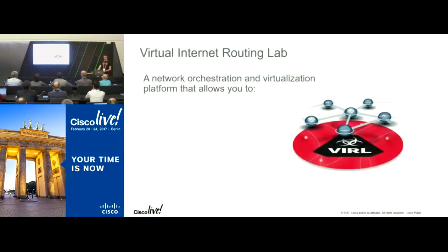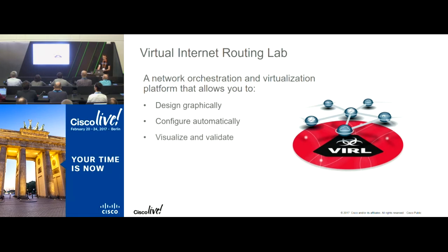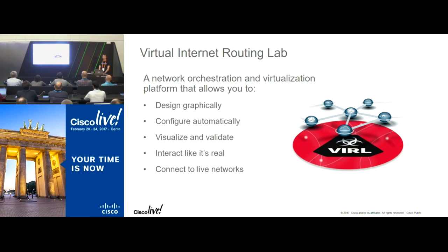VIRL is the Virtual Internet Routing Lab. It's a network orchestration and virtualization platform. What we're allowing you to do is design a network, configure it automatically for various use cases, visualize the configurations that are run, see the running simulation, validate changes, and interact with the devices like they're real. That's what differentiates it from other simulation platforms — and also the ability to connect it to live networks and interact between hardware and virtual equipment. As part of DevNet, you can integrate it with other DevOps tools, whether that's APIs or controllers.